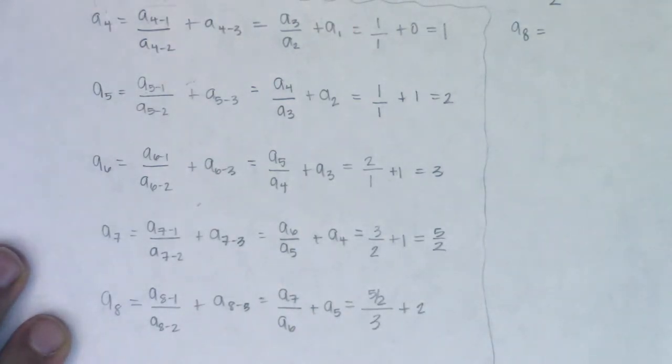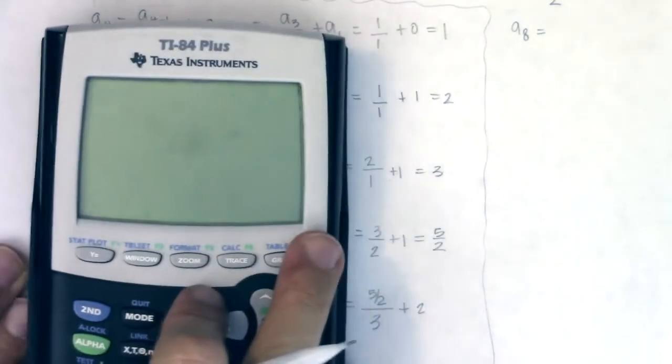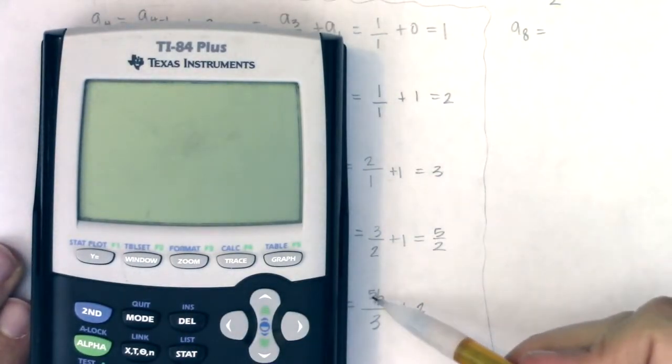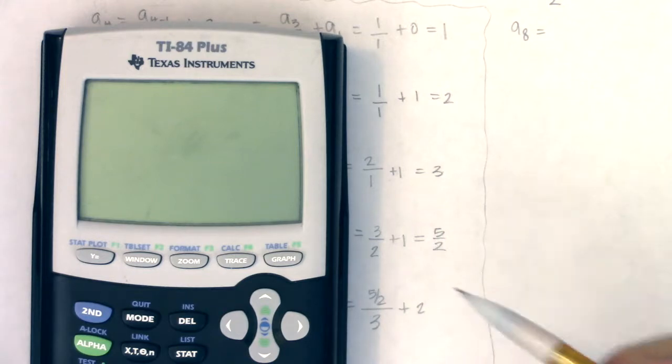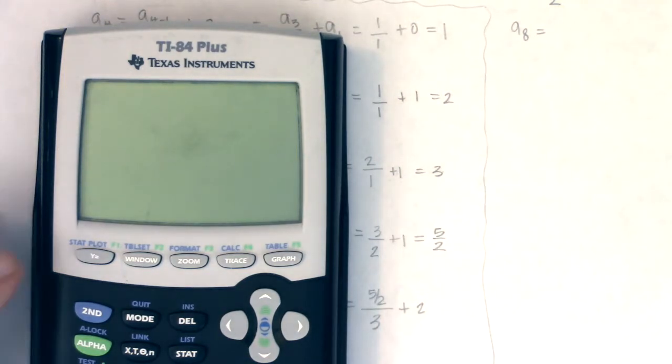Now if you want to do this by hand, go for it. I encourage it. I can see it. On my calculator, if I was going to do this by hand, five halves divided by three is five sixths. Five sixths plus two, well that's five sixths plus twelve sixths. So I think my answer should be seventeen sixths. But let me go ahead and confirm that.